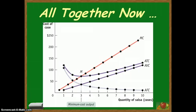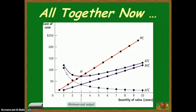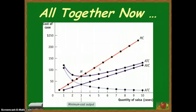Putting it all together, one thing we notice is that the marginal cost curve goes through the minimum point of the average total cost curve — that is, marginal cost intersects average total cost at the minimum cost output. When output is less than the minimum cost output, marginal cost is less than average total cost. When it's past the minimum cost output, marginal cost is higher than average total cost.